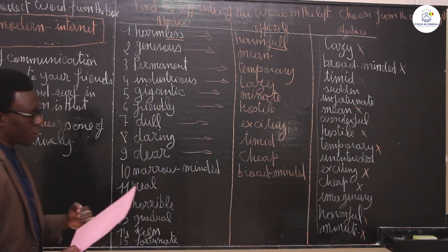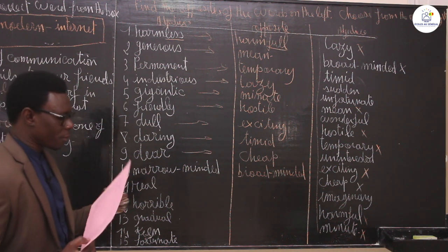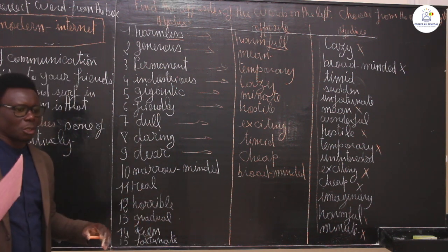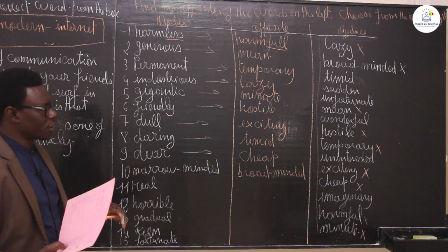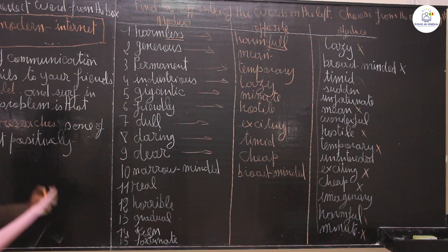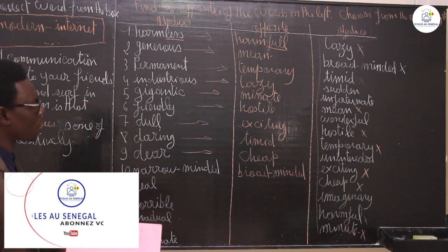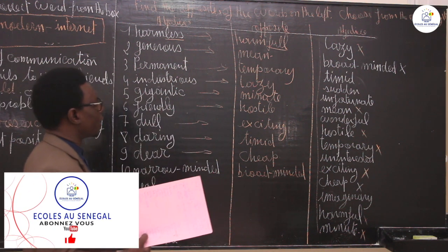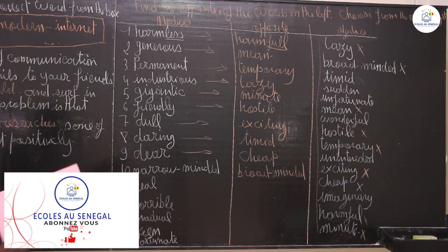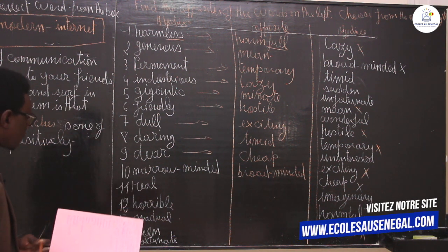Narrow-minded means somebody who does not think a lot or who hasn't got the capacity of thinking a lot. To be broad-minded is someone who is very wide in knowledge, who knows many things. A scholar, for example, is broad-minded because he reads a lot of books. In French: broad mind is 'ouvert d'esprit', narrow mind is 'étroit d'esprit'.